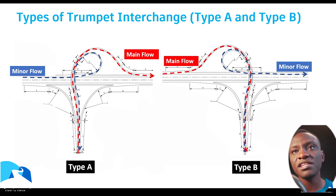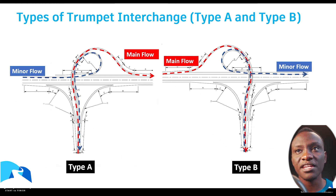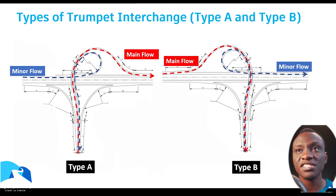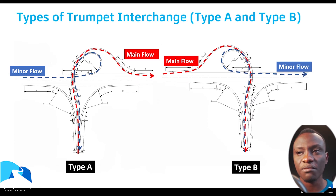Type B applies in situations where the traffic coming from the terminating motorway is less. That lower-volume traffic will have to use the loop, while the traffic coming from the motorway it has terminated into will use the semi-directional ramp.